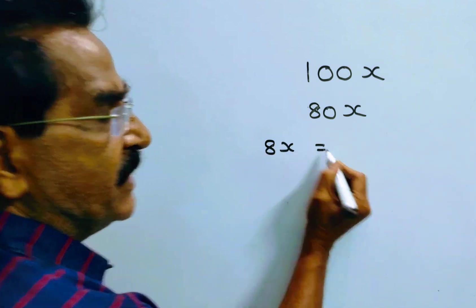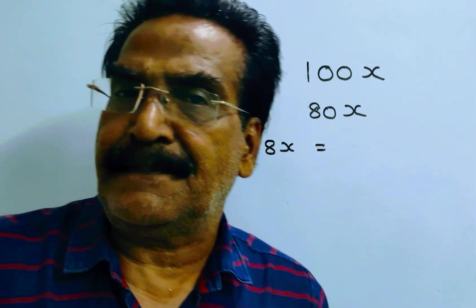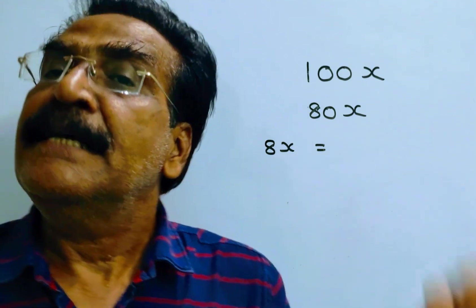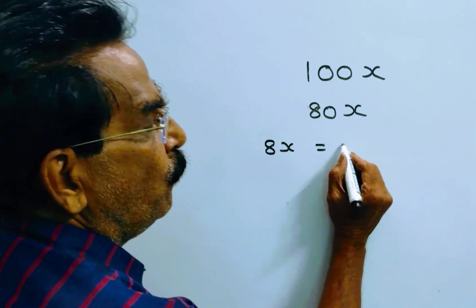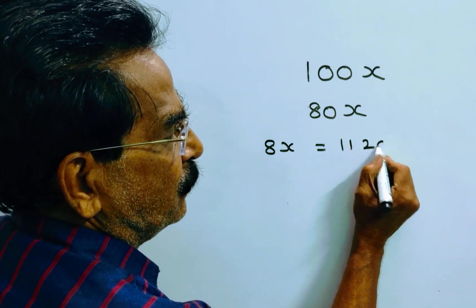Now this value is given. The difference between the expenditure on travel and to his mother is 11,200. So 8x is equal to 11,200.